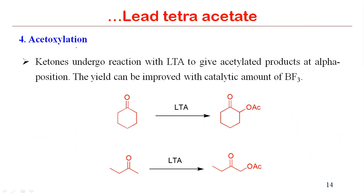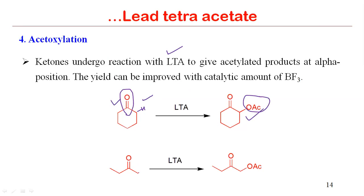The fourth application is alpha-acetoxylation of carbonyl derivatives. When we have a ketone or other carbonyl derivative with an alpha hydrogen and treat it with lead tetraacetate, we get the alpha-acetoxylated product — an acetoxy (OAc) group is incorporated at the alpha position.